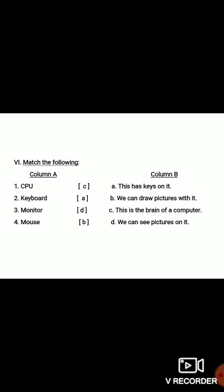Once again: CPU — this is the brain of a computer, answer C. Keyboard — this has keys on it, answer A. Monitor — we can see pictures on it, answer D. Mouse — we can draw pictures with it, answer B.